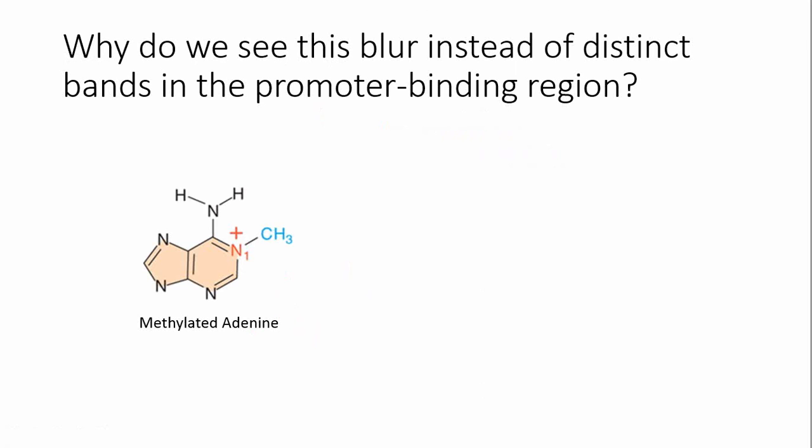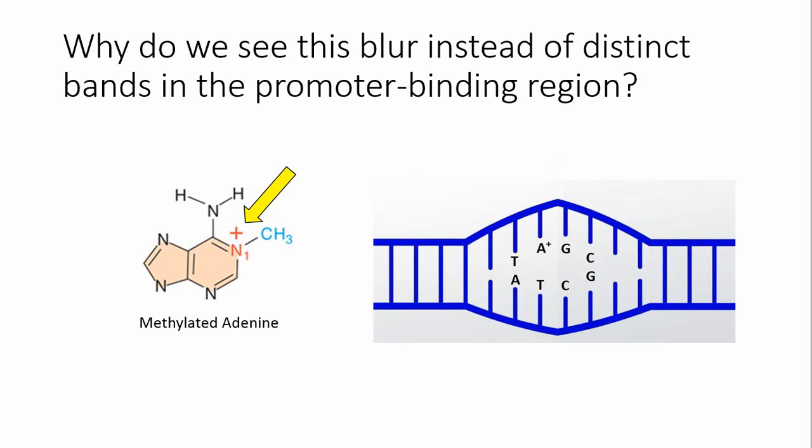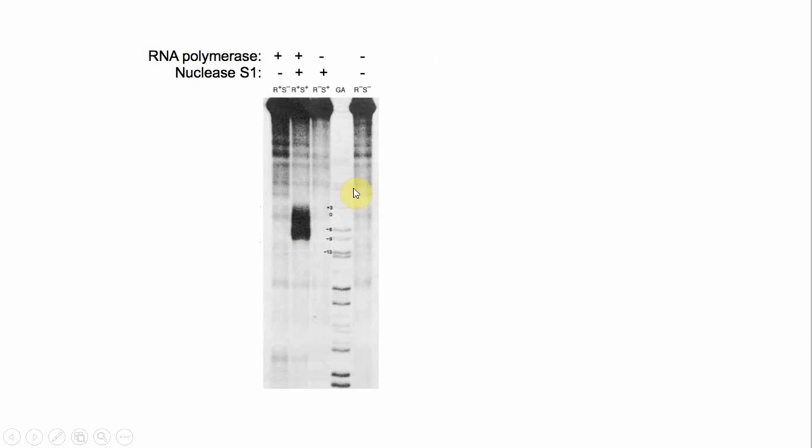Why does this occur? Well, remember that the nitrogen of adenine obtains a positive charge upon methylation. This positive charge weakens base pairing so that the other bases around the methylated adenine cannot properly reform their hydrogen bonds. The whole promoter binding region is then left with partial single-stranded character, allowing S1 nuclease to come and cut at any of these single-stranded bases. These multiple cuts create DNA of numerous lengths, producing a blur seen on this gel instead of distinct bands where there are methylated adenines.